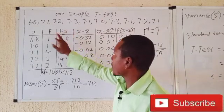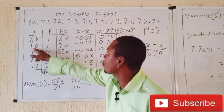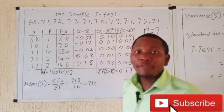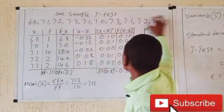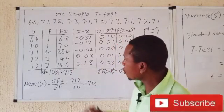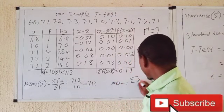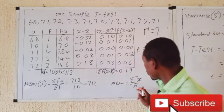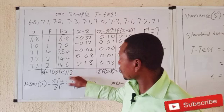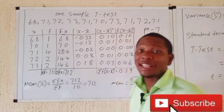Next, I calculate the f·x column by multiplying each x value by its frequency f. The formula for the mean is the summation of f·x divided by the sum of f. Summing all f·x values gives 71.2, and the total frequency is 10. Dividing 71.2 by 10 gives a sample mean of 7.12.